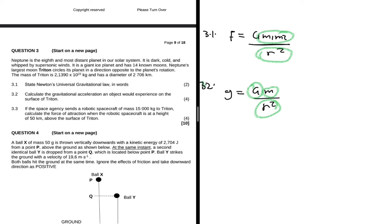So what do we have here? This will be equals to 6.67 times 10 to the minus 11, that is the value of G, and then the mass of Triton is said to be 2.1390 times 10 to the 22 kilograms.